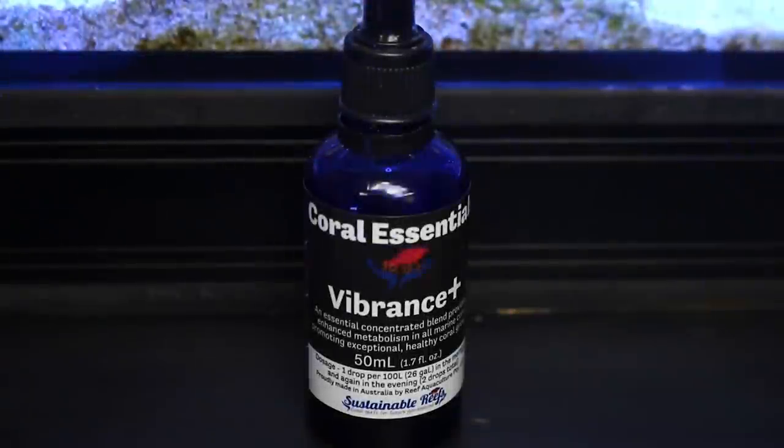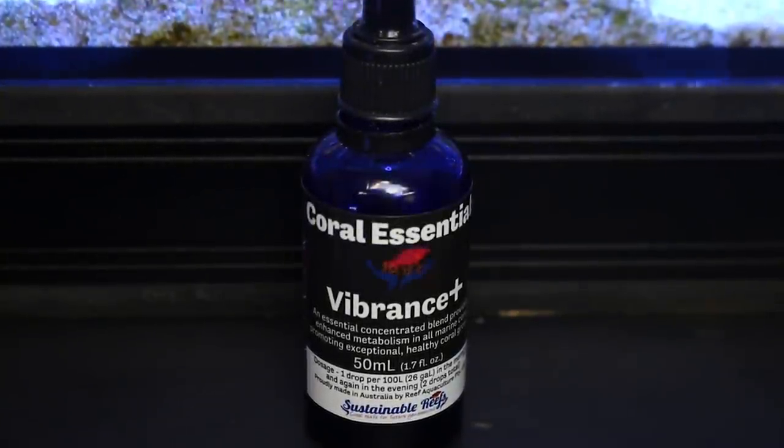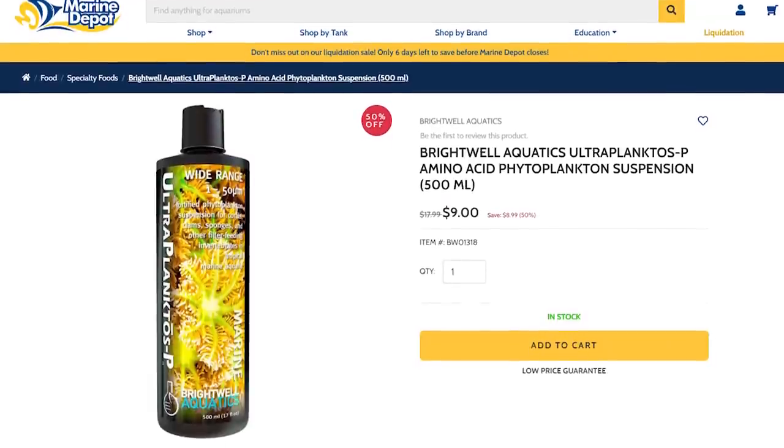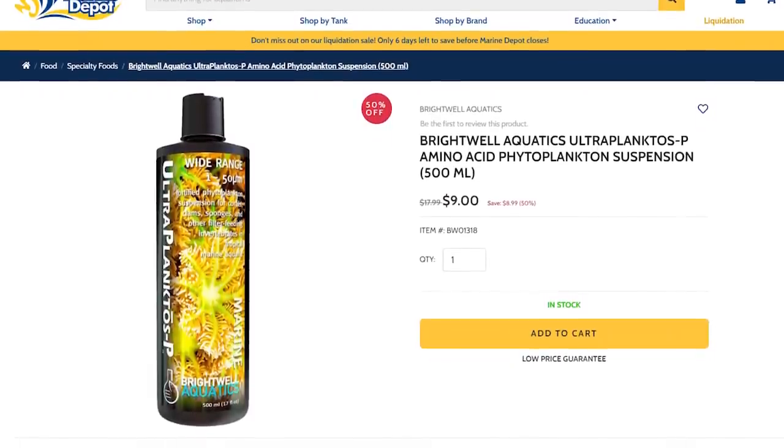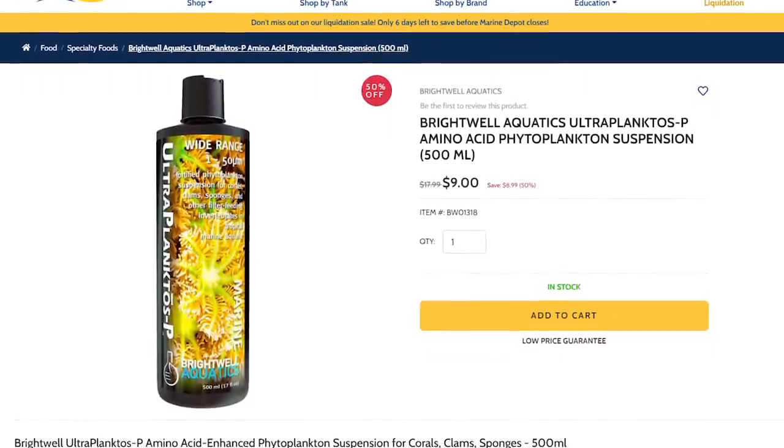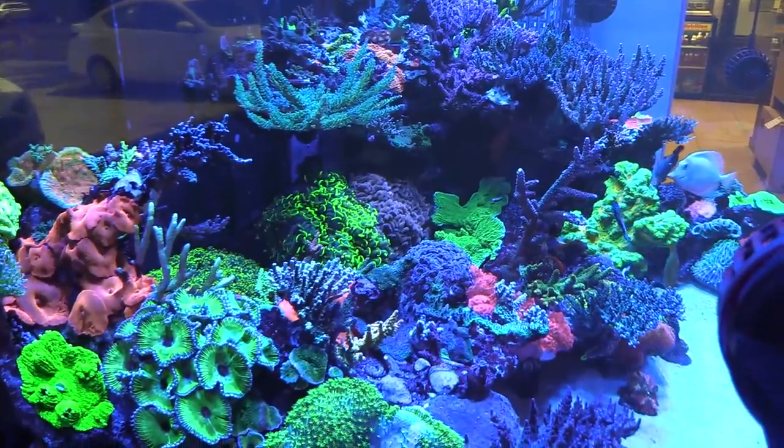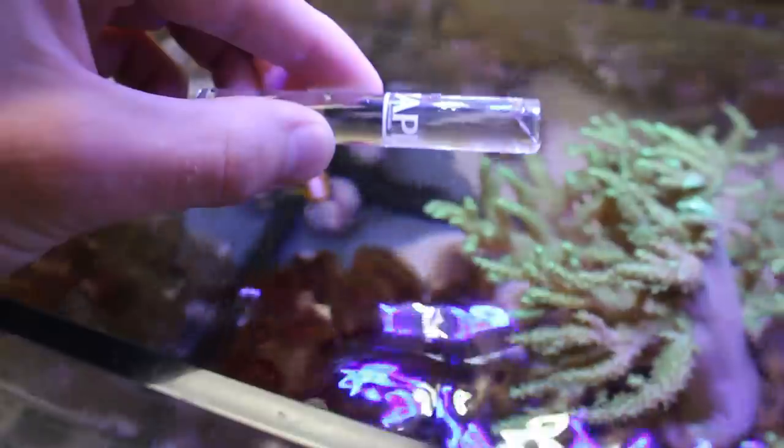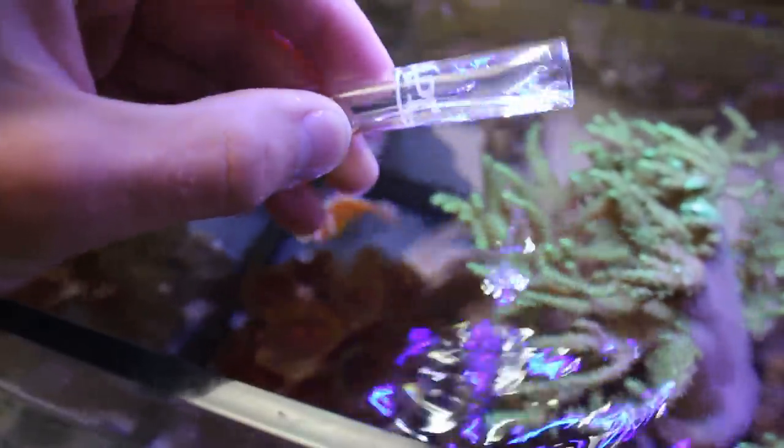Liquid foods are a suspension of ingredients formulated to provide the energy building blocks required for coral growth and coloration. These formulations contain carbohydrates, amino acids, vitamins, and other compounds that corals normally get from their natural planktonic diet. Liquid foods can be target-fed or dosed into the water.